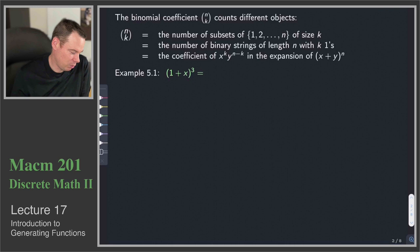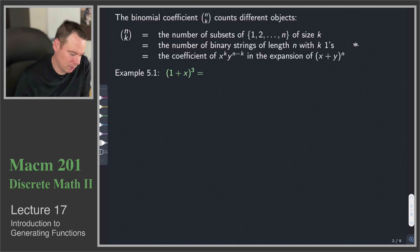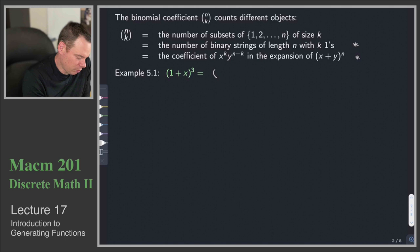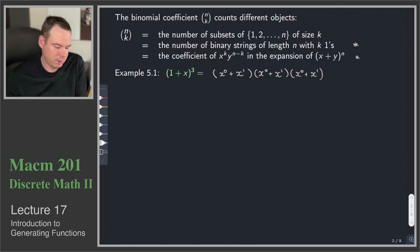Let's first look at an example: (1+x)³. We know from the binomial theorem that when we expand this out we get a polynomial of degree 3 and the various coefficients are going to be the binomial coefficients. But I want to look at the connection between binary strings of length n with exactly k ones and the coefficients in the expansion.